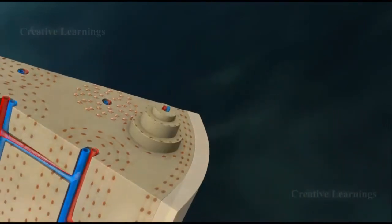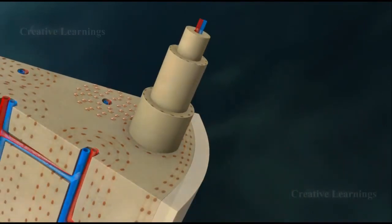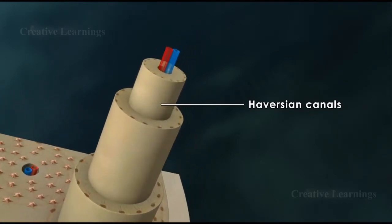As compact bone matures, it develops a network of interconnecting vascular canals referred to as Haversian canals, which contain blood vessels that supply nutrients to osteocytes.